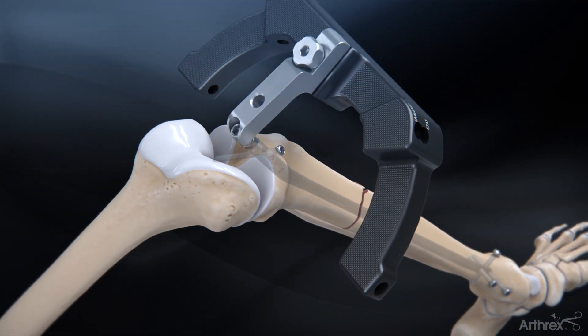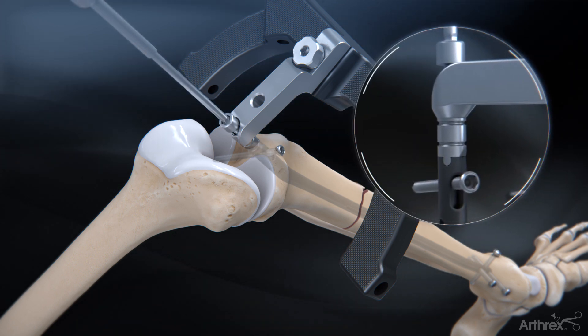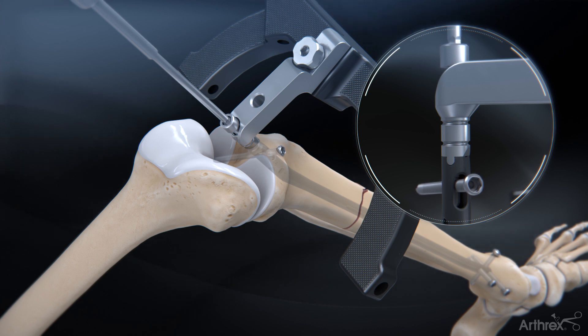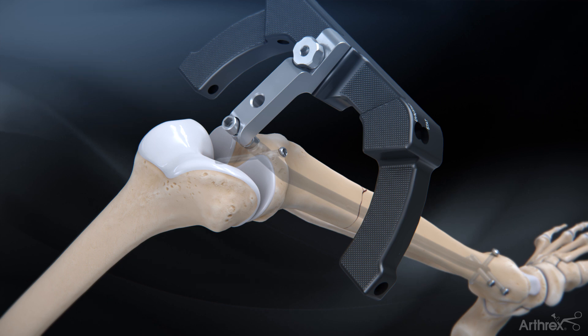For intraoperative fracture compression, insert the reduction bolt through the locking bolt at the top of the nail. Using the ball hex driver, rotate the reduction bolt clockwise until the desired compression is achieved or significant resistance is felt on the screw.